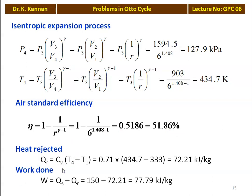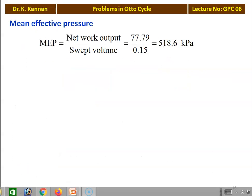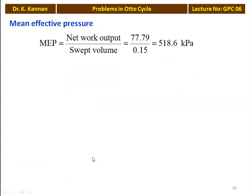Heat rejected Qr equals Cv × (T4 - T1) equals 0.71 × (434.7 - 333) equals 72.21 kJ/kg. Work done equals heat supplied minus heat rejected equals 150 - 72.21 equals 77.79 kJ/kg. Mean effective pressure equals net work output / swept volume equals 77.79 / 0.15 equals 518.6 kPa.